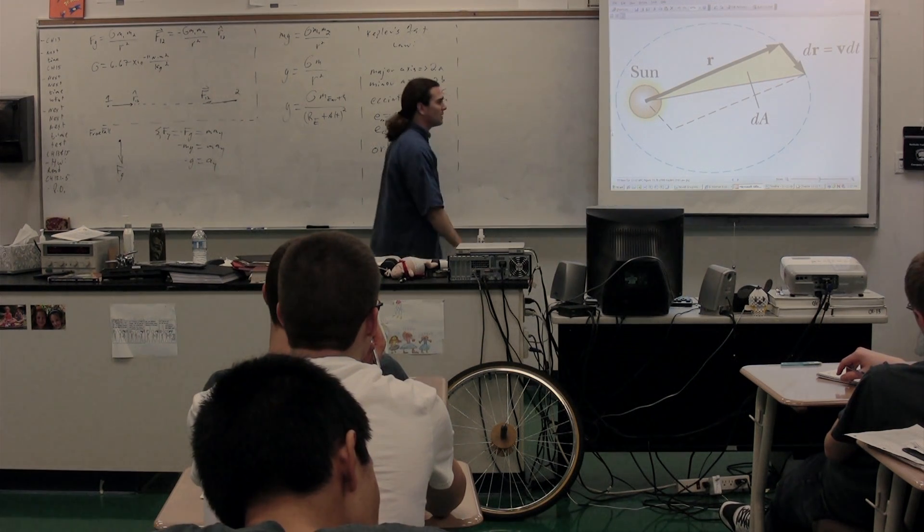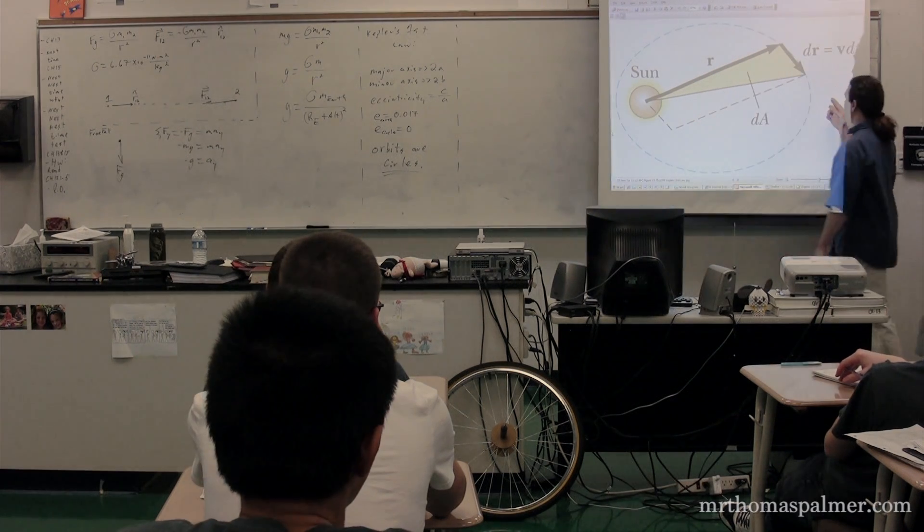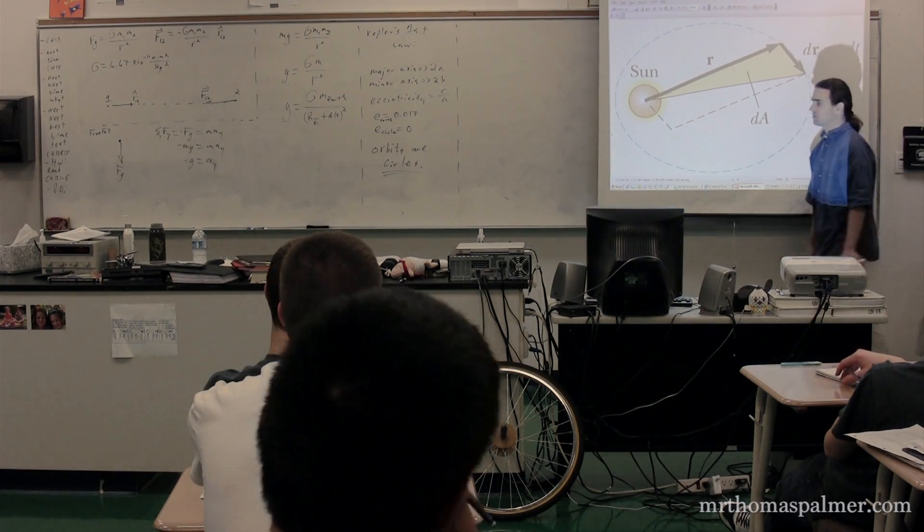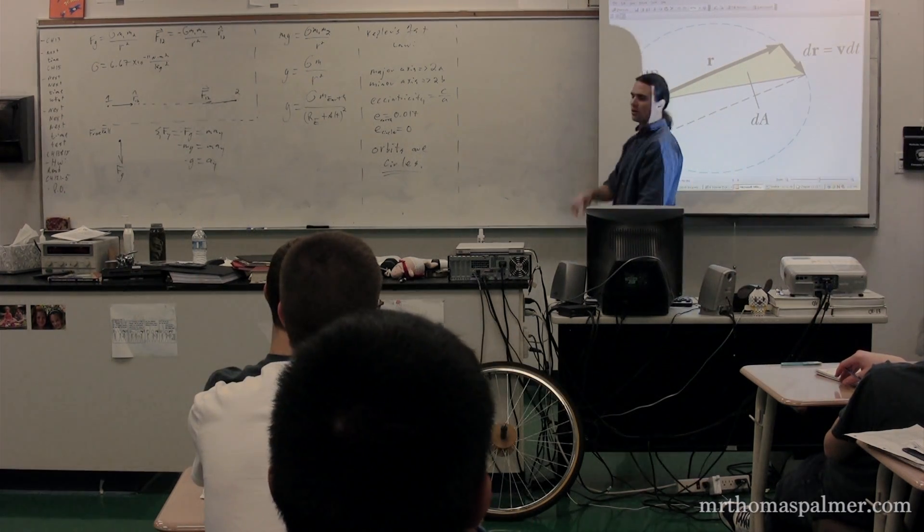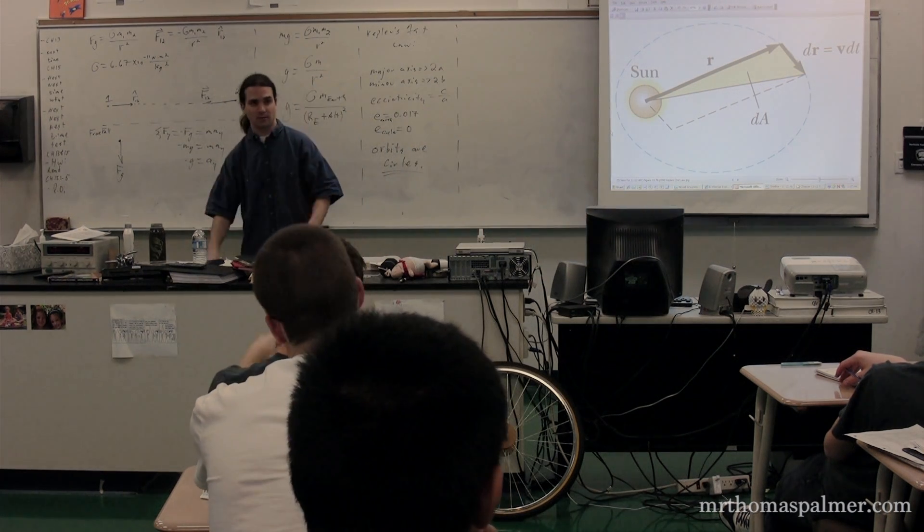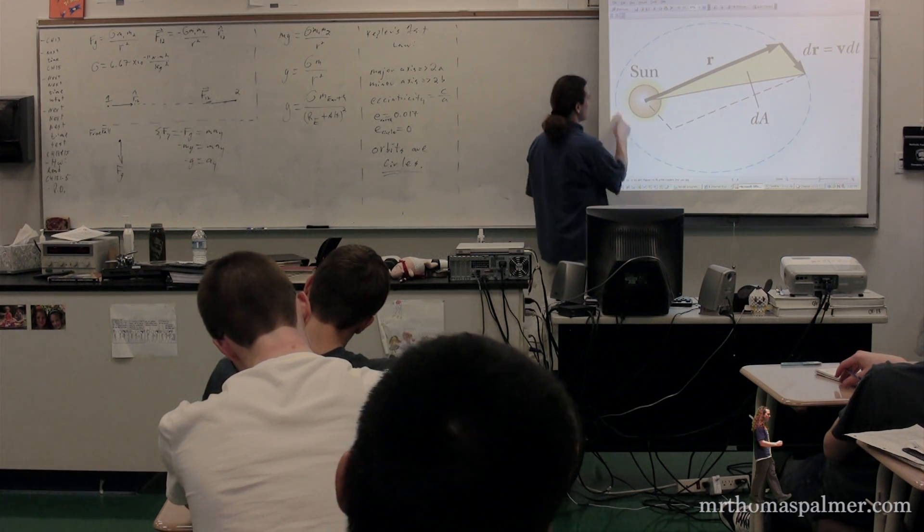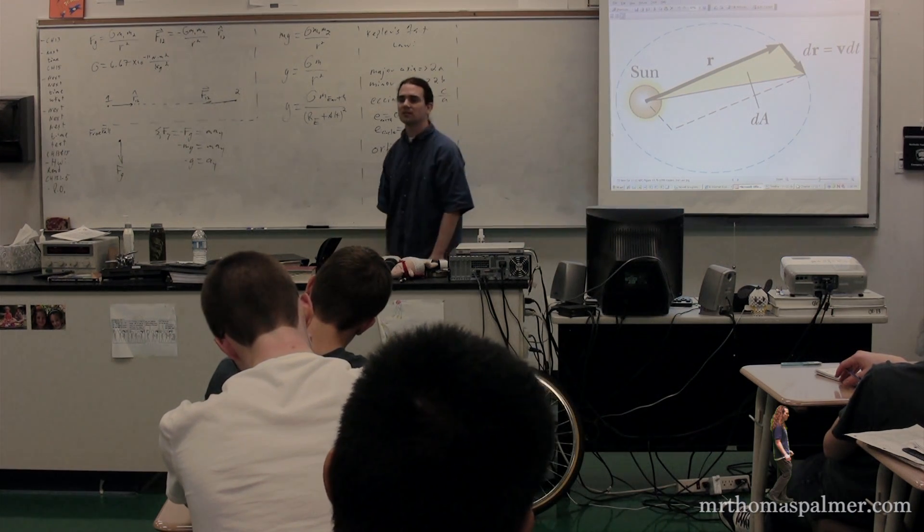From this, you should be able to tell, is the object moving faster over here when it has a larger radius, or is it moving faster when it's over here when it has a smaller radius from the Sun? Smaller, right? Because in order to have the same area, it must be moving much faster because the radius is smaller.